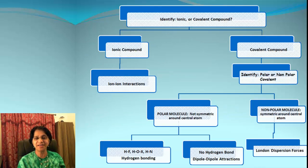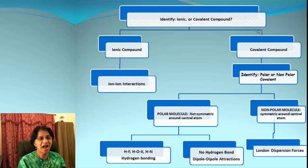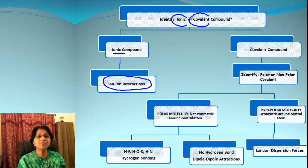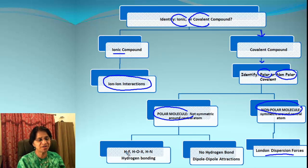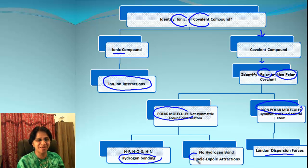This chart will explain how to identify the dominant IMF in a particular molecule. The very first thing is we look at the chemical compound name or formula and ask: is the compound ionic or covalent? If the compound is ionic, we know the interaction will be ion-ion interaction. If the compound is covalent, we ask: is the compound polar or non-polar? If it is non-polar, that means we will have London dispersion. If the compound is polar, we ask one more question: do we have a bond between hydrogen and fluorine, hydrogen and oxygen, or hydrogen and nitrogen? If we have that bond, that means we have hydrogen bonding, and if we don't, that must be dipole-dipole interaction.